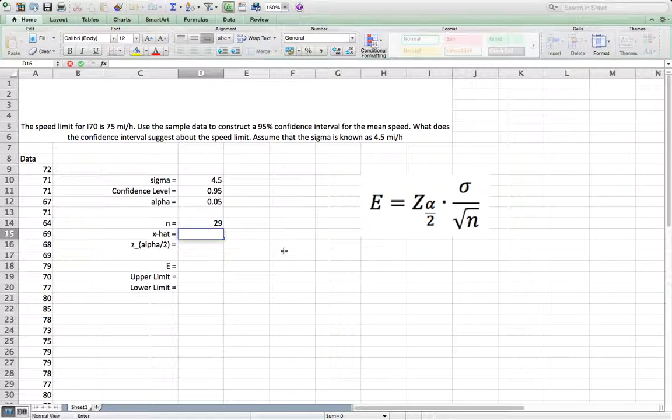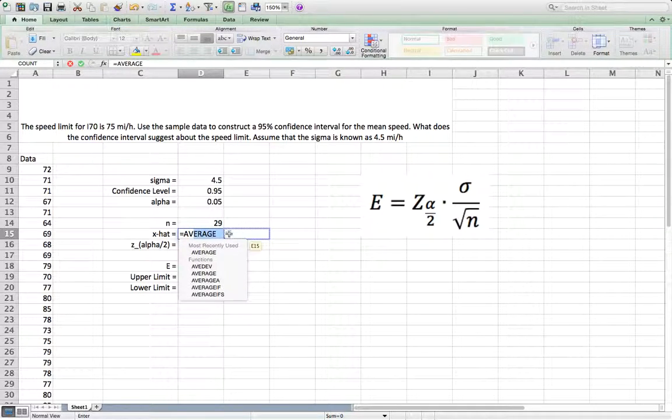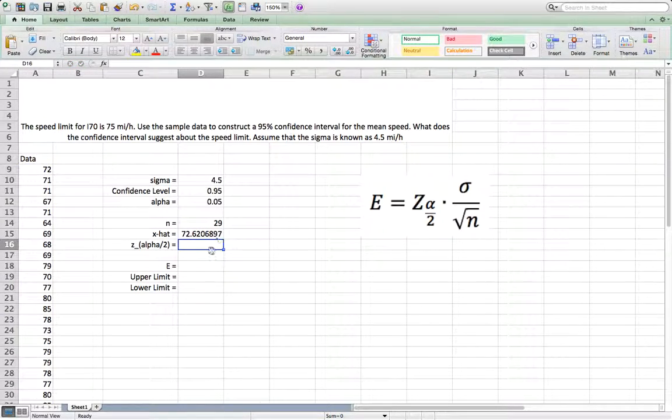Now let's find x hat, which is the mean of the sample. So we use the Excel function average, from A9 to A37. So the average is 72.6 miles per hour.